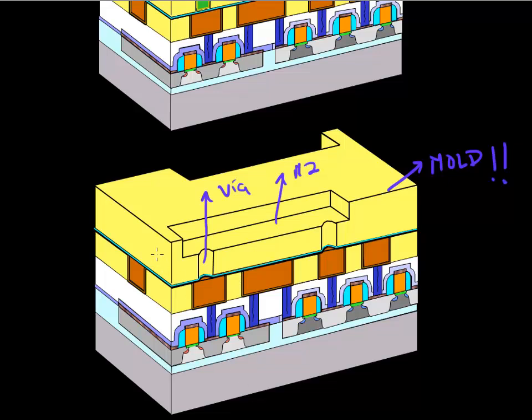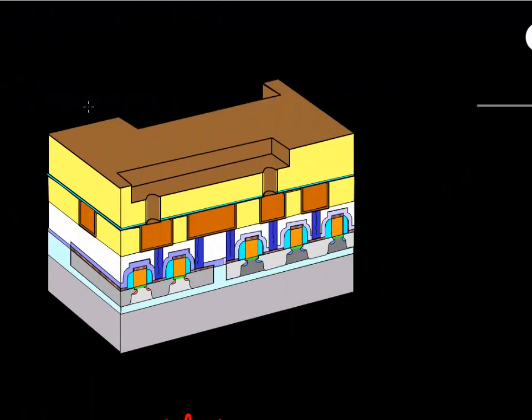what we do is we deposit the nitride layer. So we deposit this titanium nitride or tantalum nitride barrier, and we also deposit thin layer, conformal layer of copper, using a CVD process. So we deposit this thin layer of copper, which acts as a seed. So this copper, the rest of the copper fill is done by a process called electroplating.